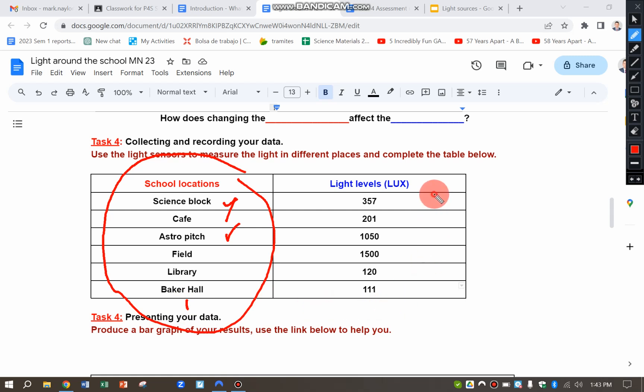And my dependent variable is on the right-hand side, as always on my table, and it's the light levels that we measure in LUX using the meter. You can see I've made my measurements here for the different areas of the school.